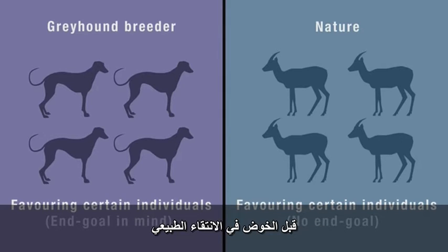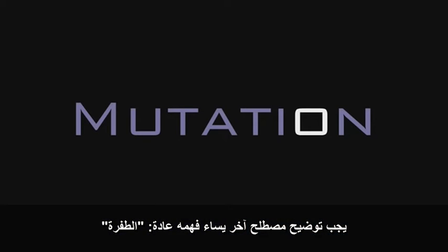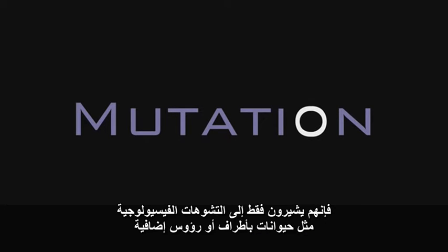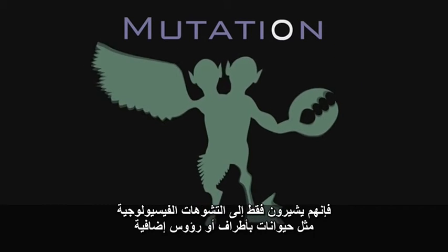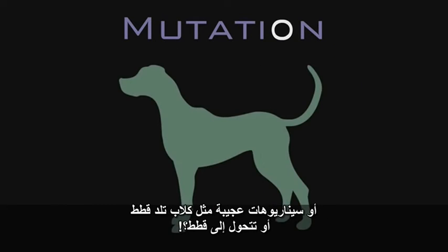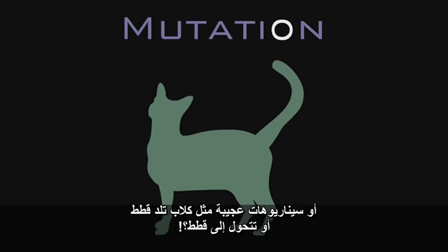Before I say more about natural selection, I want to mention another commonly misunderstood term — mutation. Many think that when biologists talk about mutation, they're referring only to dramatic malformations like animals with extra limbs or heads, or far-fetched scenarios like dogs producing cats, or even morphing into cats.